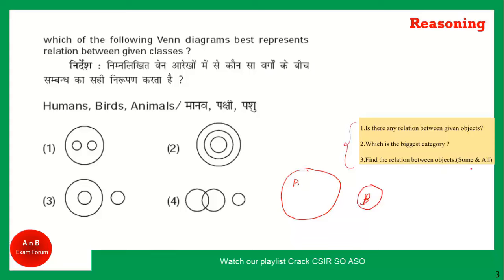Next, find the relationship between given objects in terms of some, all, or none. We know that all humans are some kind of animals - in biology, humans evolved from animals. So all humans are animals. As you can see, option 3 is the correct answer for this question.